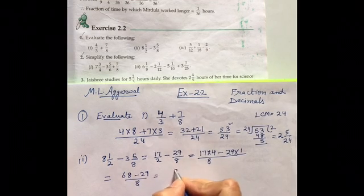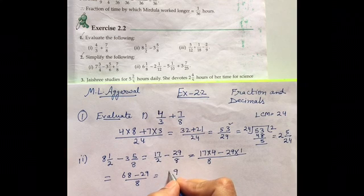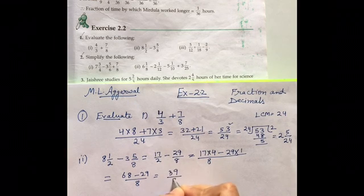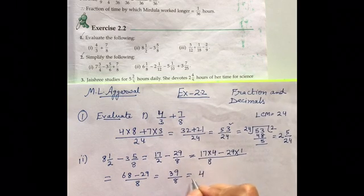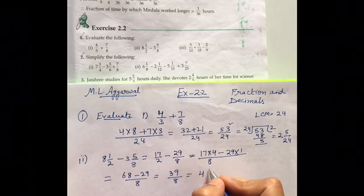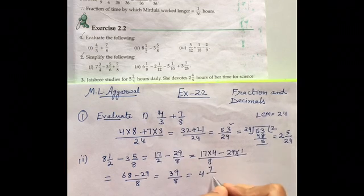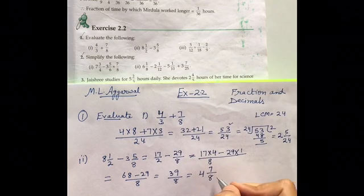So it is 17 4 ja 68 minus 29 upon 8. Subtract them 9 and it is 5 minus 2 is 3 upon 8. Now, write it in the mixed fraction. 8 4 ja 32. So, it will be 4 7 upon 8.